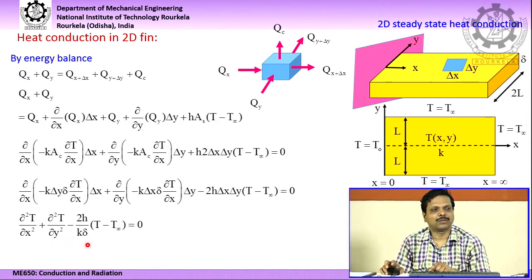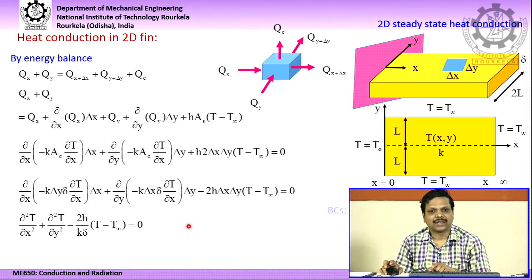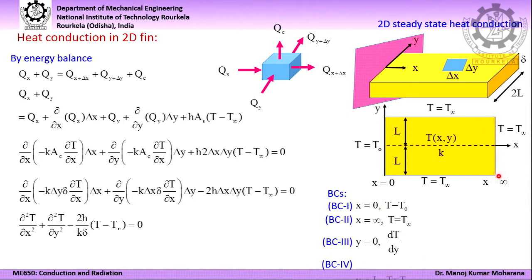This will require in total 4 boundary conditions: 2 along the x direction and 2 along the y direction. If you closely observe, this governing differential equation is not homogeneous. The four boundary conditions are: at x = 0, T = T₀; at x = infinity, T = T∞; at y = 0, dT/dy = 0 (the symmetry line); and at y = L, T = T∞. If you closely observe these boundary conditions, other than the third one, the remaining three are not homogeneous.